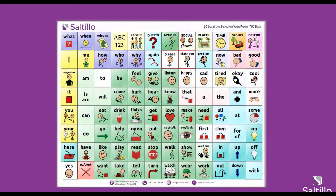The third handout in the materials tab is a low-tech board that you can print out and use. It is based off of WordPower 60 Basic, so if your child or student is using WordPower 60 Basic, it will look very similar to the home page. This is a 96-location information board, and we've added question words, a little bit more of the social phrases, and the categories at the top. You can follow along on this as we practice later in the evening.